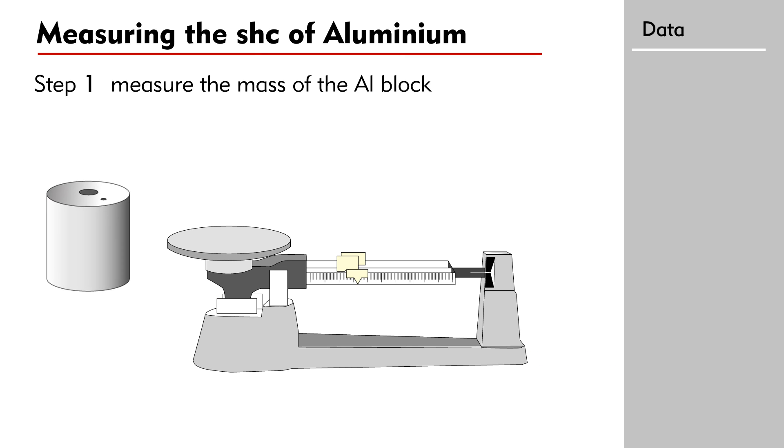To start the experiment, place the aluminum block on the triple beam balance. Record the mass as m = 1.06 kg.